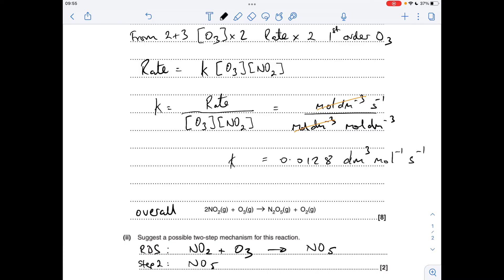Right, so what have we got so far? We've already got an NO2 and NO3, so we need another NO2. And we haven't made the N2O5 yet or the O2, but we can make it all from step two.